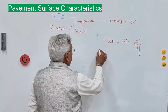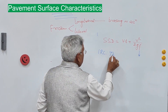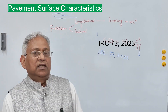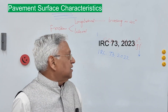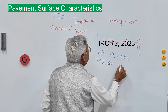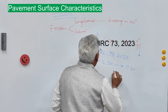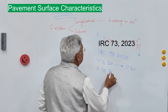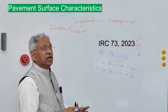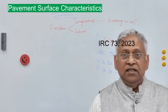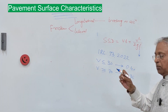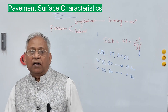IRC 73 (2022) provides the value of longitudinal friction f. When speed is less than or equal to 30 km/h, f = 0.4; when speed is greater than or equal to 80 km/h, f = 0.35. It is low at high speed and high at low speed. Between these two values, f decreases by 0.01 for every 10 km/h increase in speed.